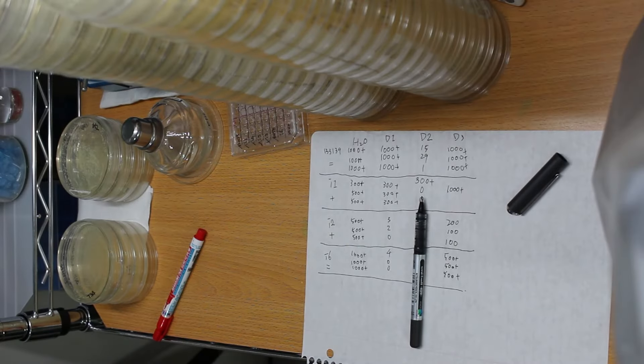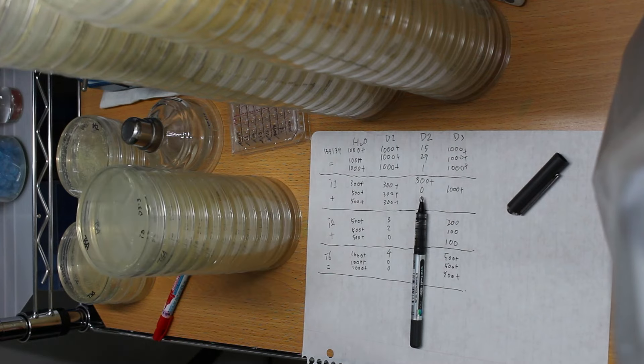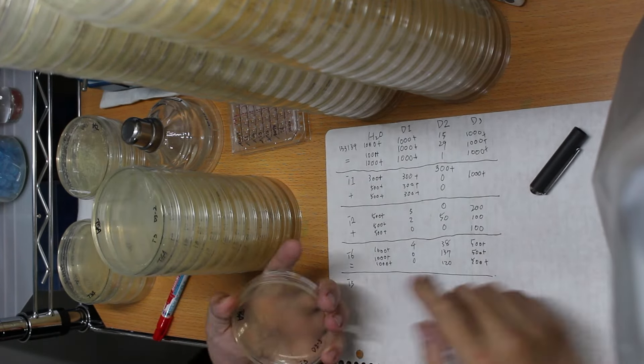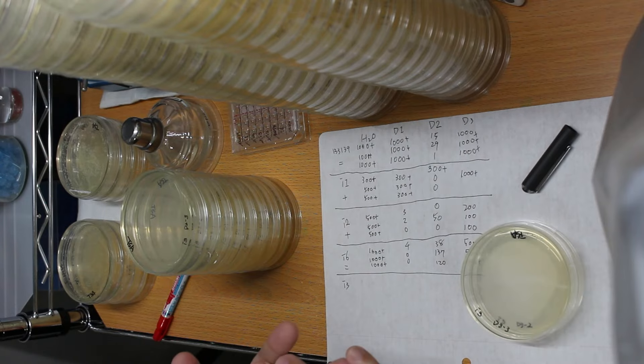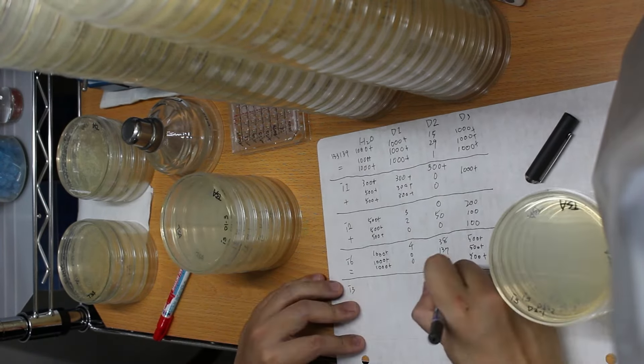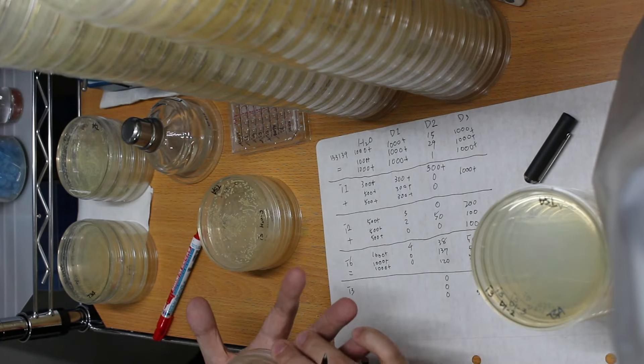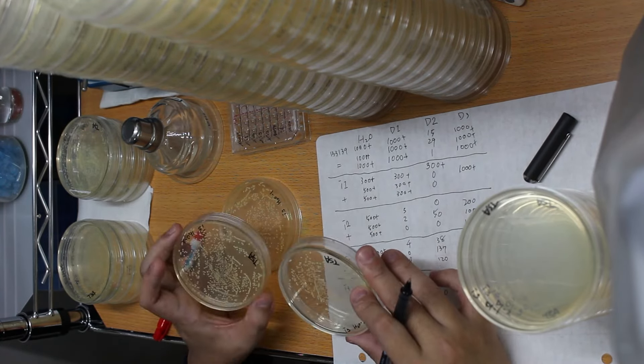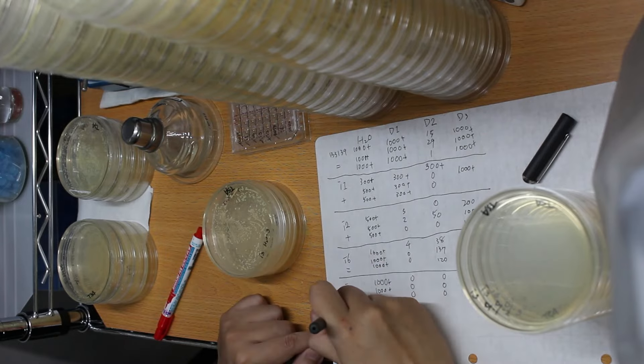And the testing results look like this. And again, because there are so many colonies, I don't bother to count them one by one. Anyway, I turned this testing result that I hand wrote down into a spreadsheet.